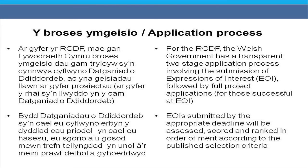For the Rural Community Development Fund, the Welsh Government has a transparent two-stage application process. Stage one is to submit a narrative expression of interest. Stage two, for those successful at expression of interest stage, involves submitting a project application. Expressions of interest submitted by the deadline are assessed, scored, and ranked in order of merit according to published selection criteria.